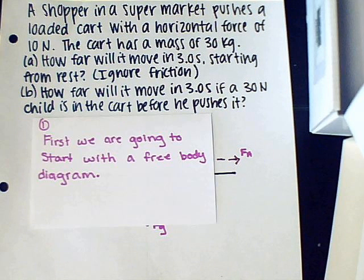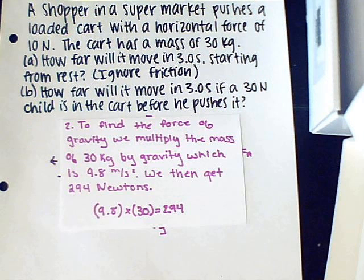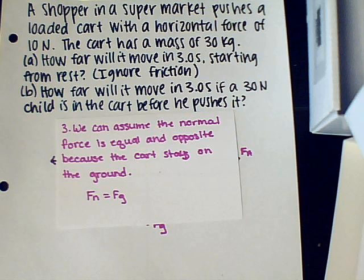First, we're going to start with a free body diagram. To find the force of gravity, we multiply the mass of 30 kilograms by gravity, which is 9.8 meters per second squared. We then get 294 newtons. We can assume the normal force is equal and opposite because the cart stays on the ground. Fn is equal to Fg.